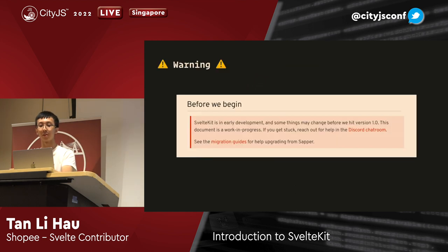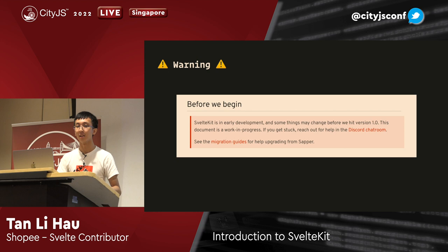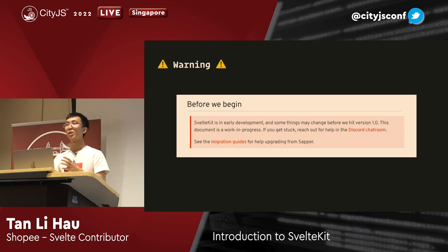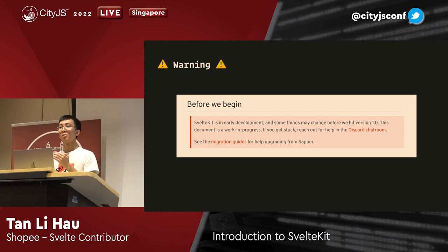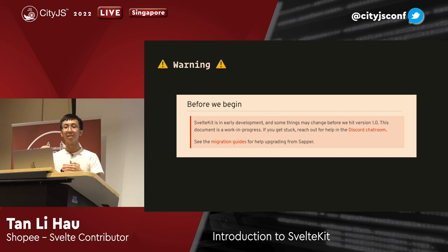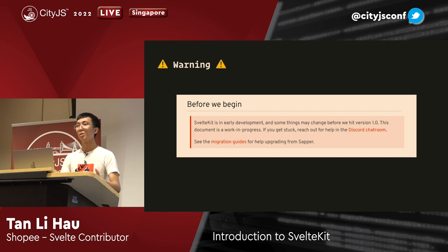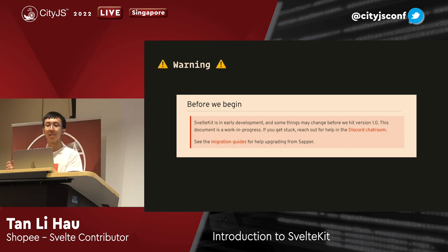Before I move on, I do have a word of warning: SvelteKit at this point is still in beta. The Svelte team cares a lot about breaking changes and doesn't want to ship something as stable that will break your app. We're still in beta because from time to time we realize there are things we have to break - some APIs that have to change. So today's talk is more of a rough preview to know about SvelteKit, what you can do, and to prepare yourself for the future.